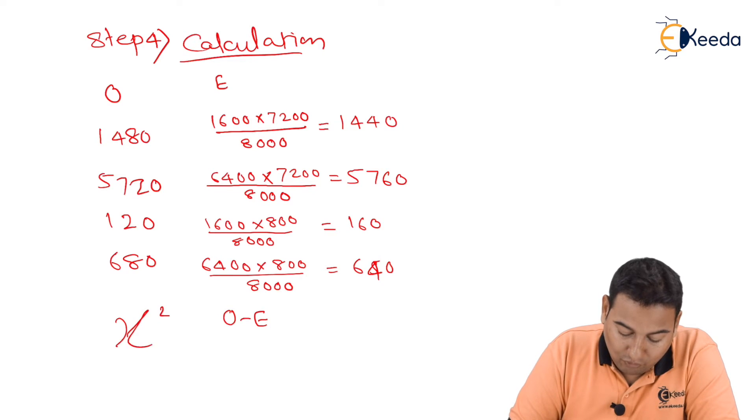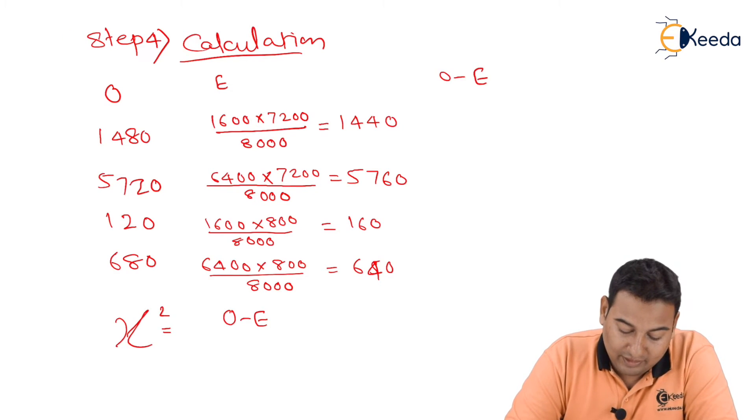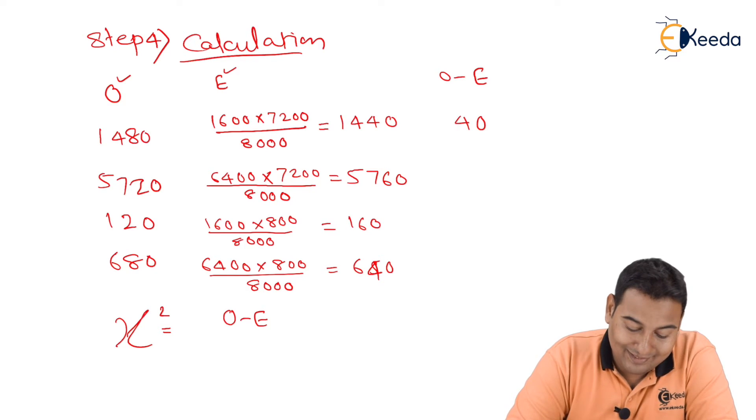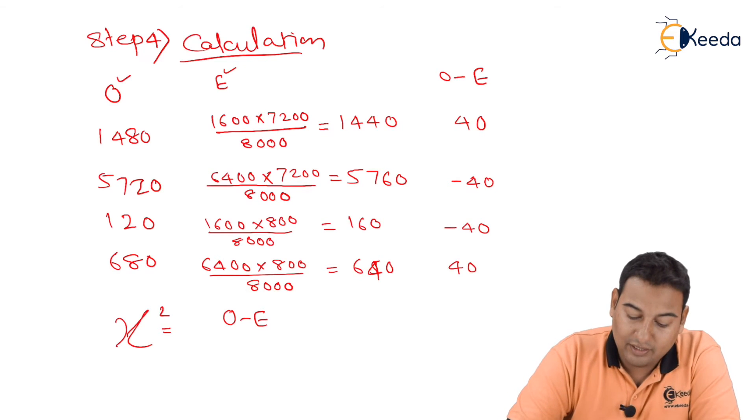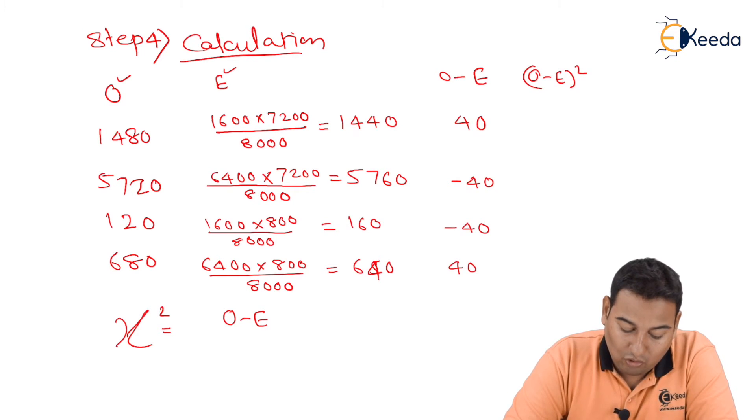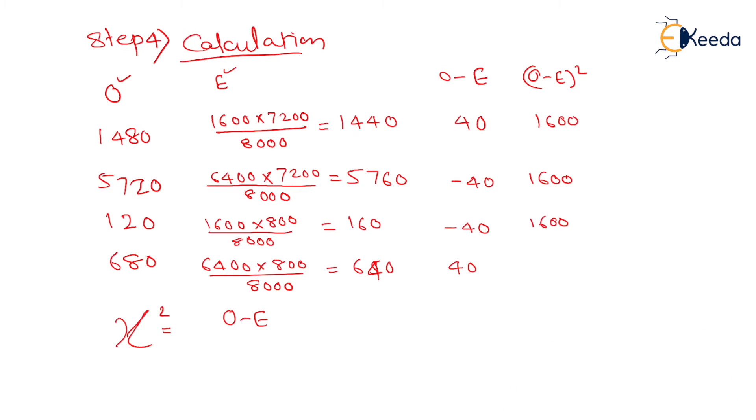What is next? Observed minus expected, then the whole square upon expected. This is the thing that I need to calculate for chi square. Observed minus expected is 40, then minus 40, minus 40, and 40. Observed minus expected the whole square, all are 1600. Observed minus expected the whole square upon expected: this is 1.111, 0.277, 10, and 2.5. If you add, you will get the value of chi square, that is summation, which is 13.88.